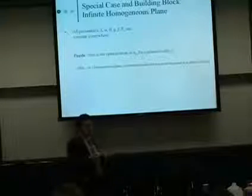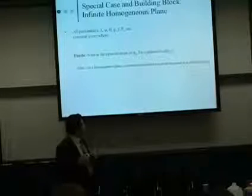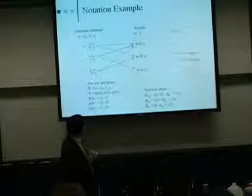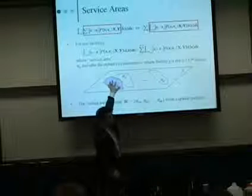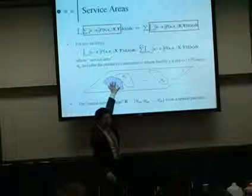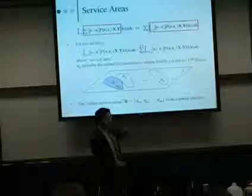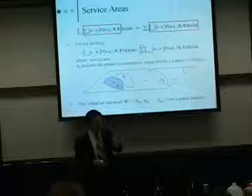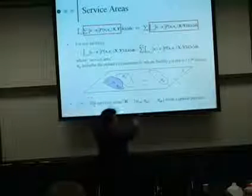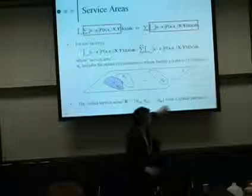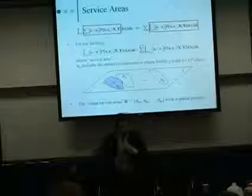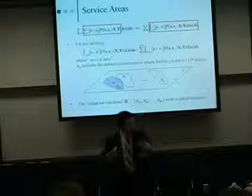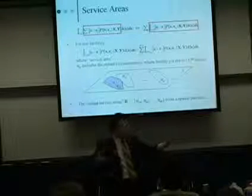rj0 is the set of customers that choose one facility as its first choice. We would have a partition like that — it's going to form a spatial partition. Each facility would have some customers around it that choose this facility as its first choice. They form a partition.